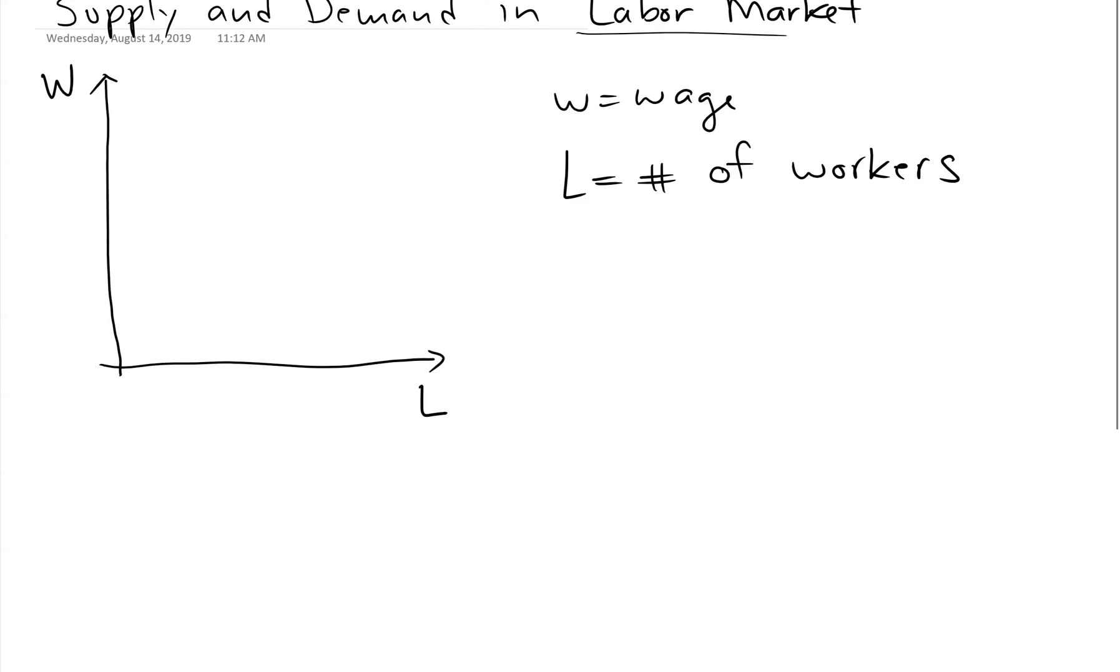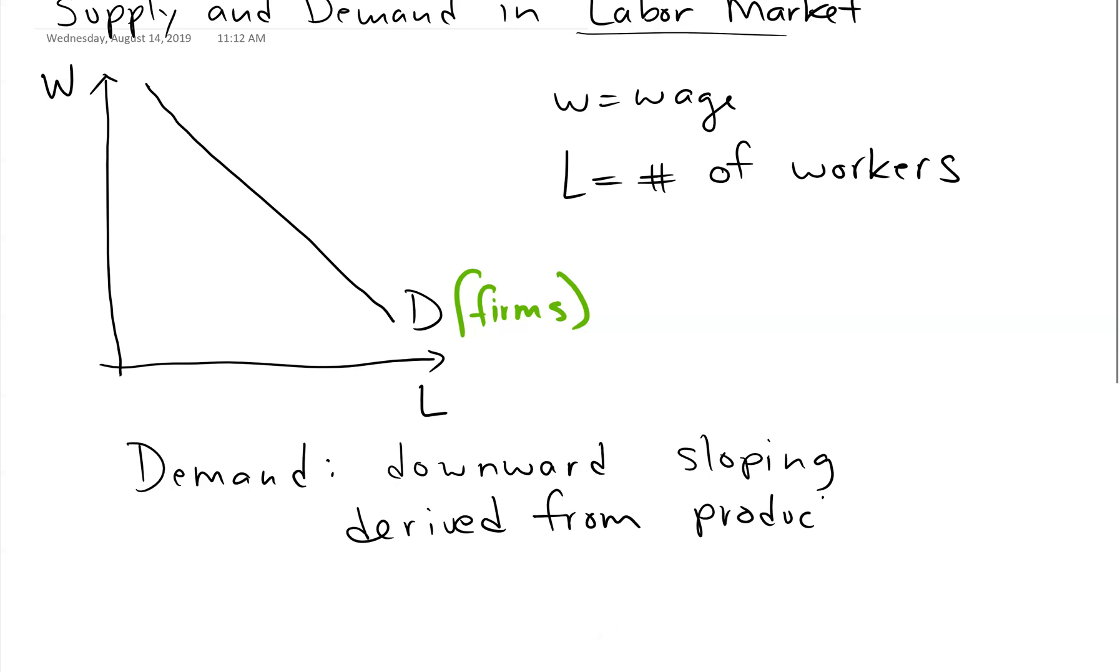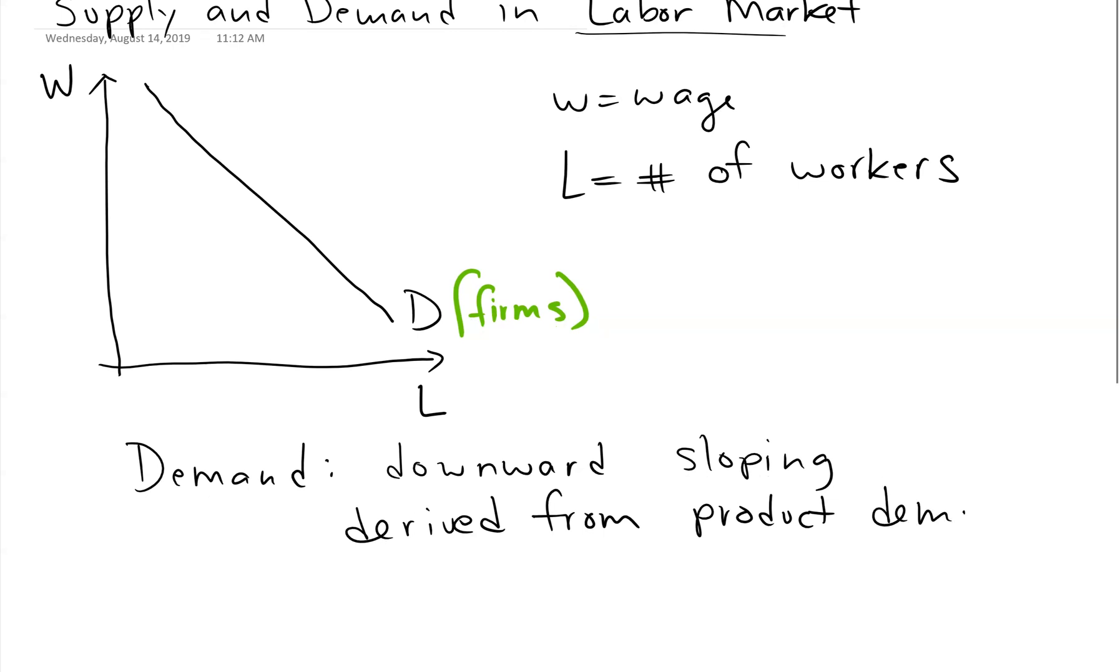Our demand is still downward sloping, but it's a little different than before. Here our demand is coming from the firms. In the case of supply and demand for a product market, the demand is coming from the households, but in this case it's coming from the firms. The firms are the ones doing the hiring. So the demand has two things about it. One, it's downward sloping, which we'll talk about in just a second. And the second, it's derived from product demand. They're not just hiring workers for fun. They're hiring workers because the workers produce something which people want to buy. So the demand for labor for a particular type of labor really depends on the demand for the products that use that kind of labor in the production process.